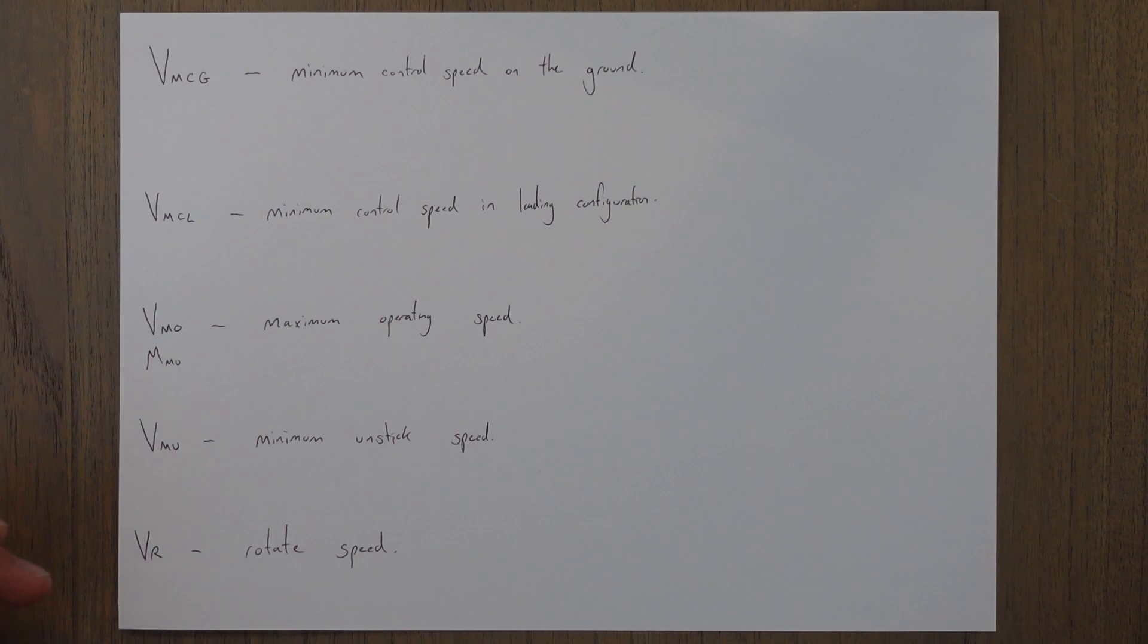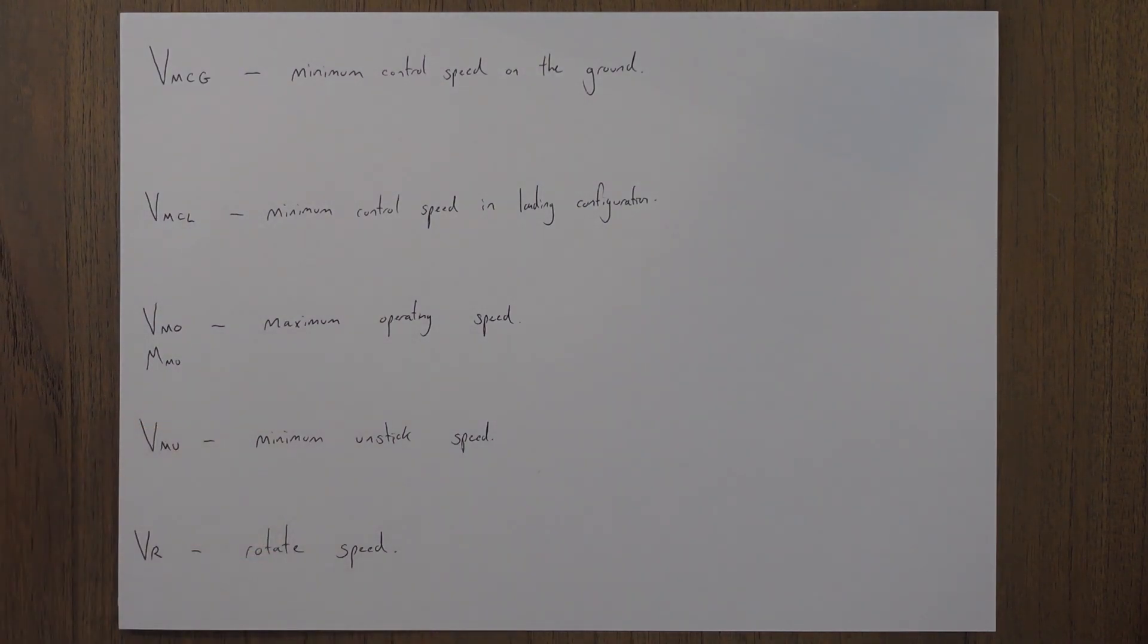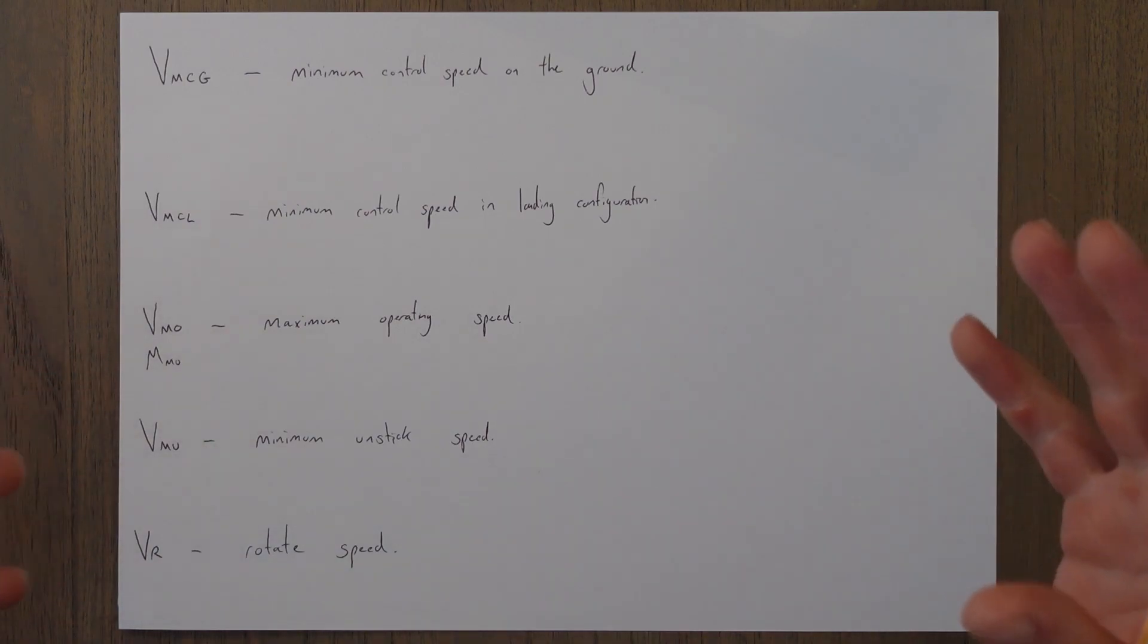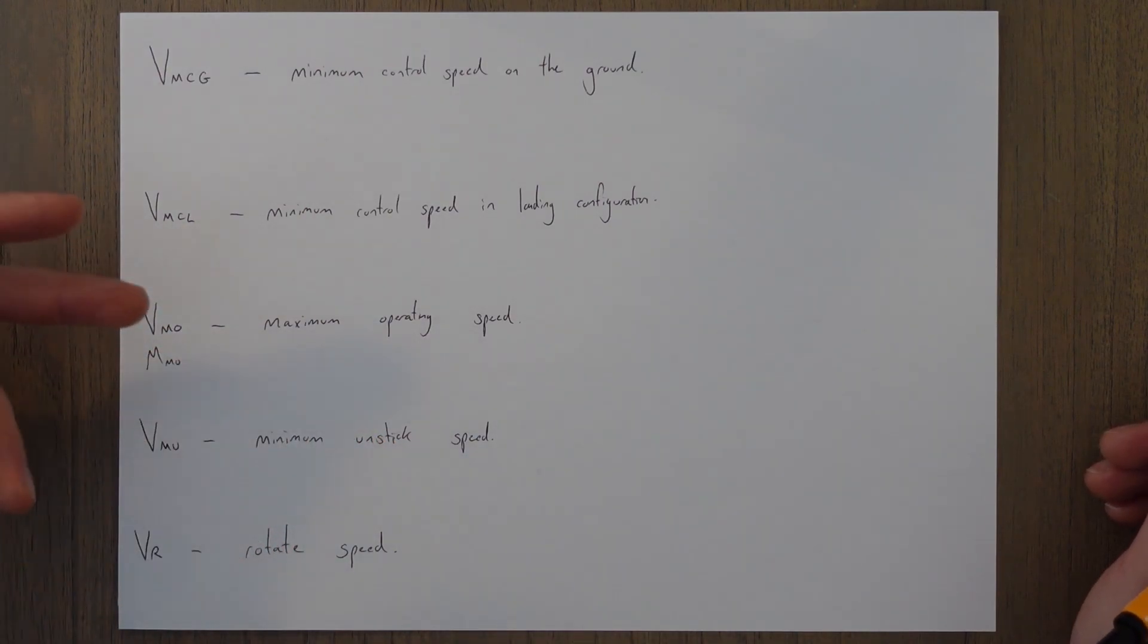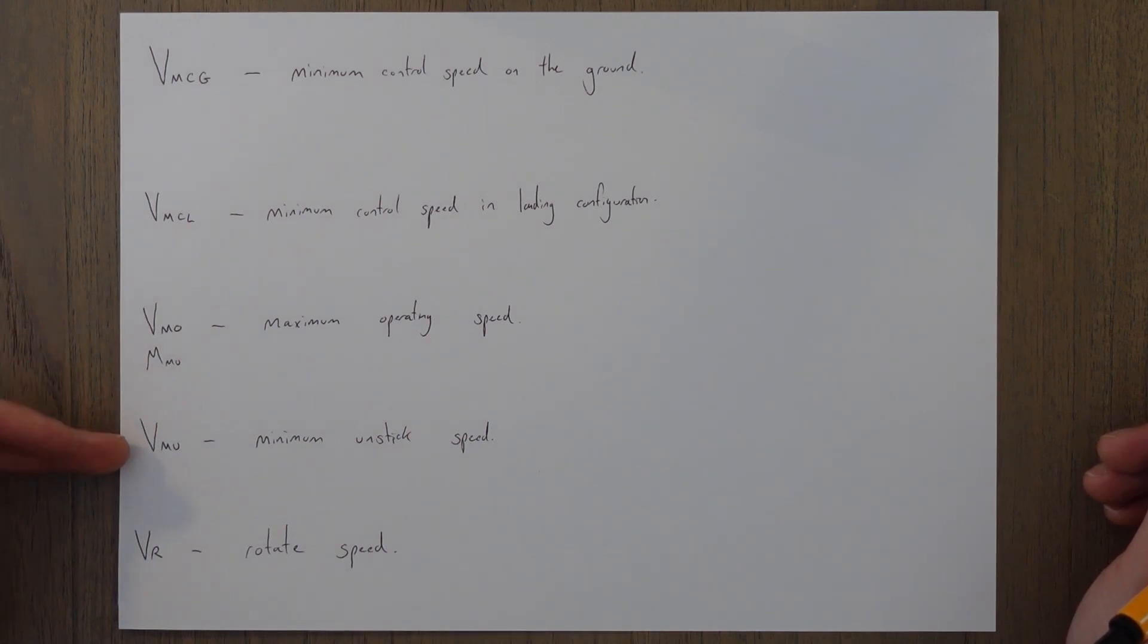VMU is the minimum unstick speed, unsticking from the ground. This is the speed at which the aircraft can safely lift off the ground and fly away. It is slightly different to VLOF, the speed at which the aircraft actually lifts off the ground and starts to fly, because VMU is the minimum speed and VLOF is the real speed that this happens on that specific takeoff. So VLOF will always be at or above VMU.